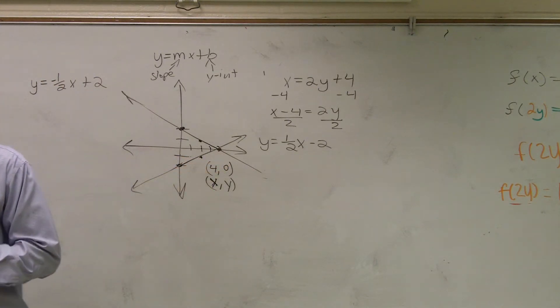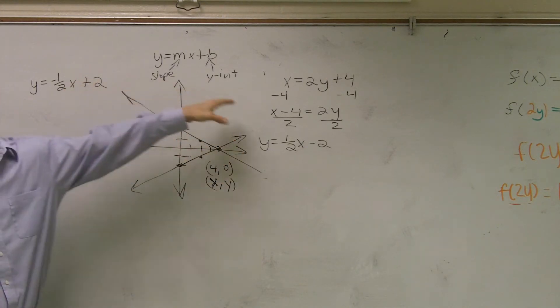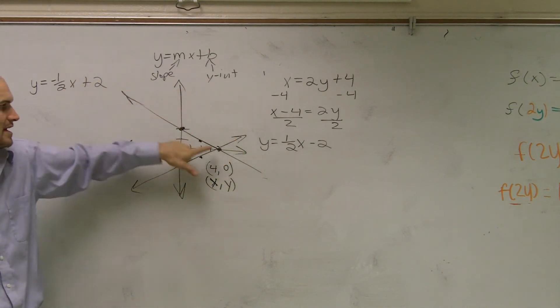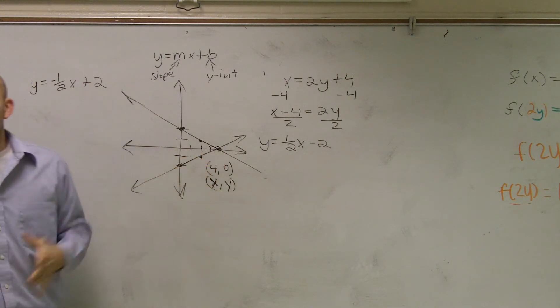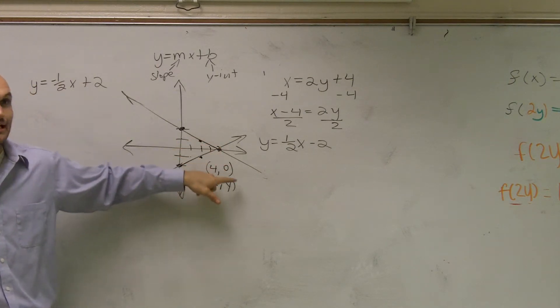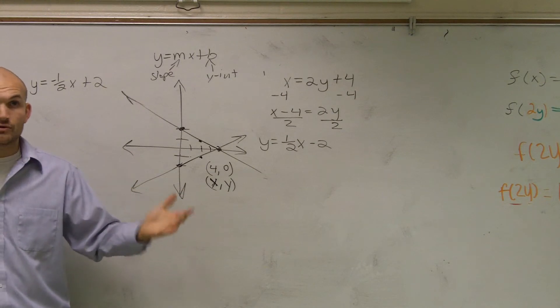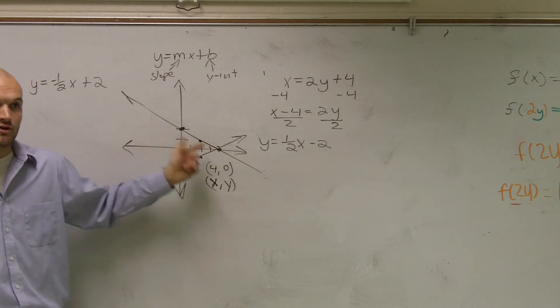So what I want to show you guys is this is how we solve the solution graphically. We solve the equations for y, we graph them, and we find the intersection point. Now there is a way algebraically that we can do this. Since we know that x is equal to y, they're equal to each other, it doesn't matter which one you use. They are the same for both equations.